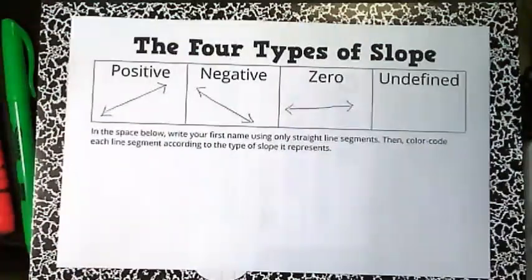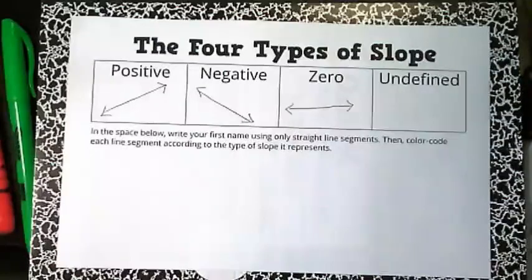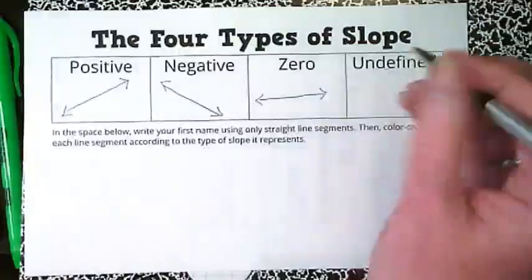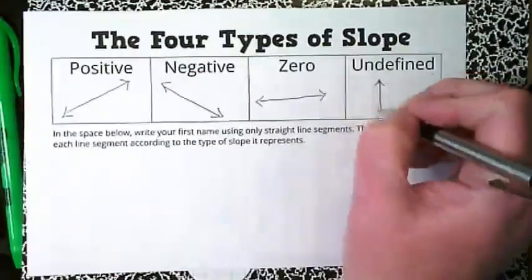And then the last one is a math curse word. We do not say that word out loud in here. You can whisper it. It goes vertical, straight up and down.